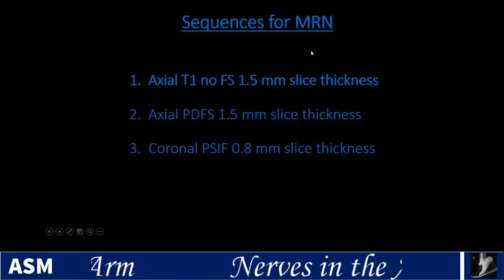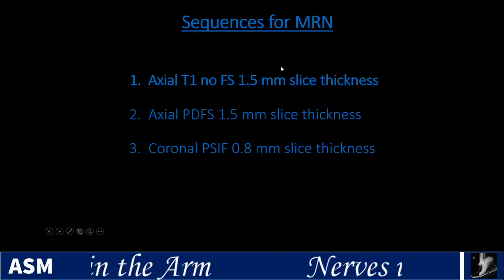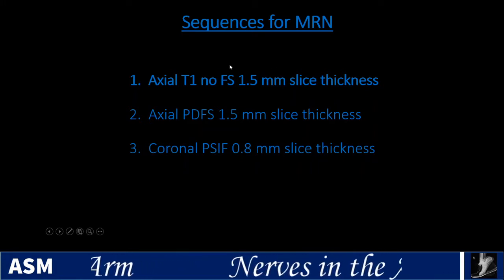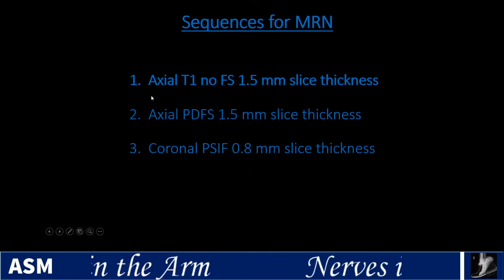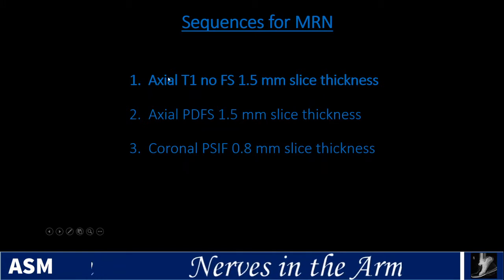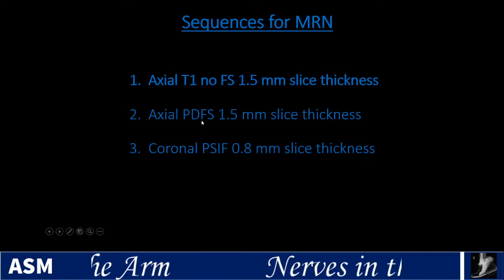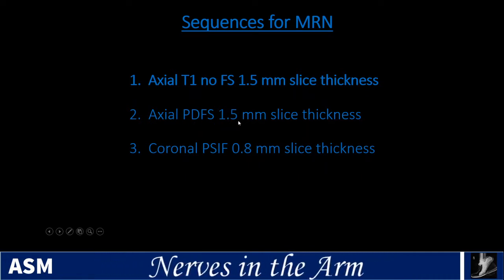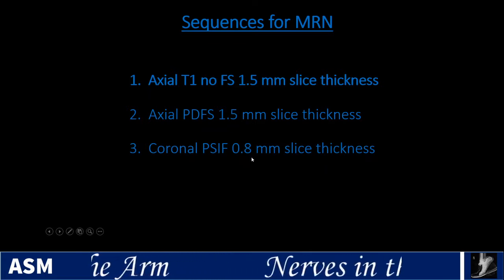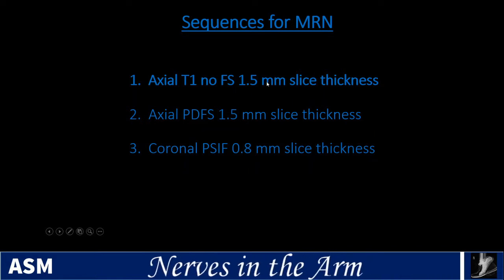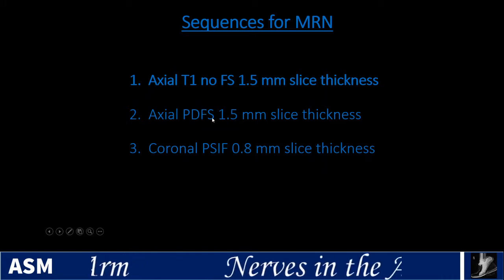When we do MRI to look at nerves, we perform MR neurography. The definition isn't uniformly agreed upon, but there are three sequences we use for MR neurography in the extremity. The first is axial T1 without fat sat at 1.5mm slice thickness, used for fascicular architecture and anatomy and looking for scar tissue around the nerve. The second is axial proton density fat sat at 1.5mm. The third is a coronal PSIF 3D image at 0.8mm.